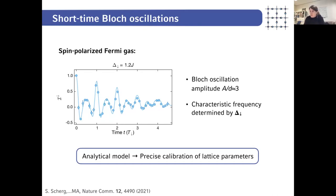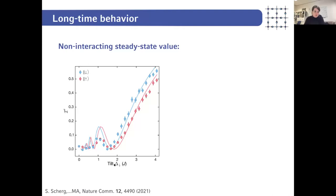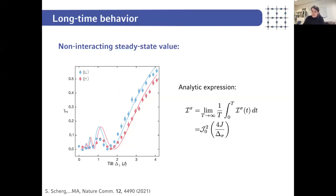After long evolution times, once the coherent dynamics has dephased, a steady state develops. In the non-interacting limit we can calculate that analytically — it shows a Bessel-type behavior as a function of the tilt. Here you see the steady state value as a function of tilt, measured for the spin-up and spin-down components, which are slightly different due to the magnetic field gradient — there is a small spin dependence on the order of 9–10 percent. The solid line is a calculation with no free fit parameters.